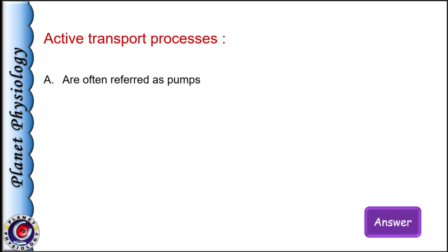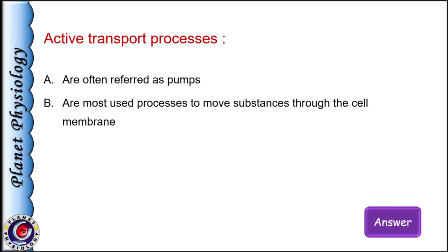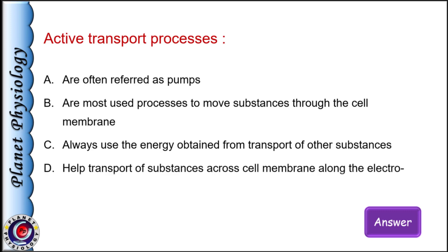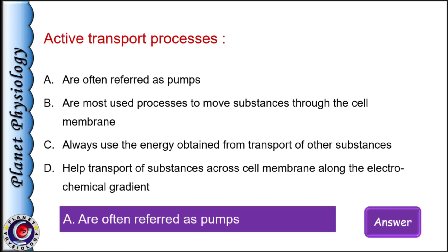Active transport processes — statements: a) are often referred to as pumps, b) are the most used processes to move substances through the cell membrane, c) always use energy obtained from transport of other substances, and d) help transport of substances along the electrochemical gradient. The correct answer is option A. Most transport across cell membranes happens by passive mechanisms, so options B and D are incorrect. Option C uses the word 'always,' which is wrong because primary active transport uses ATP directly — statement C applies only to secondary active transport.